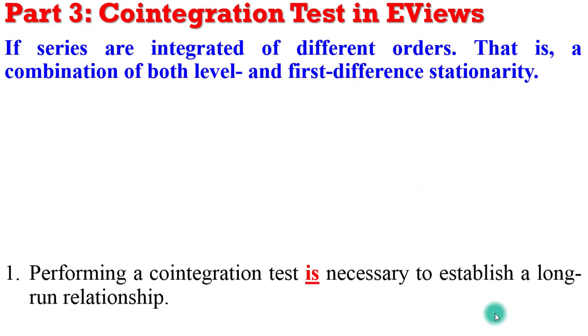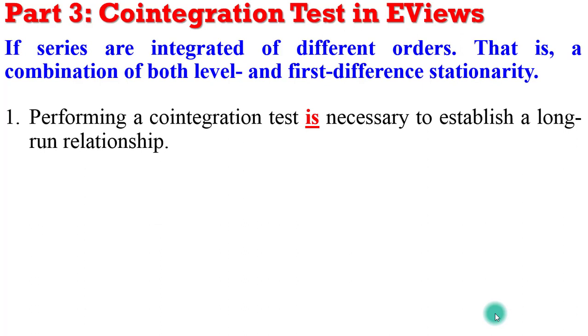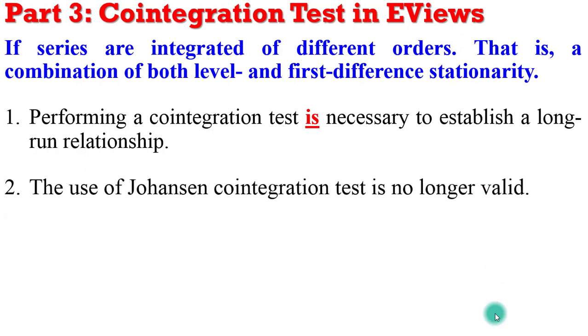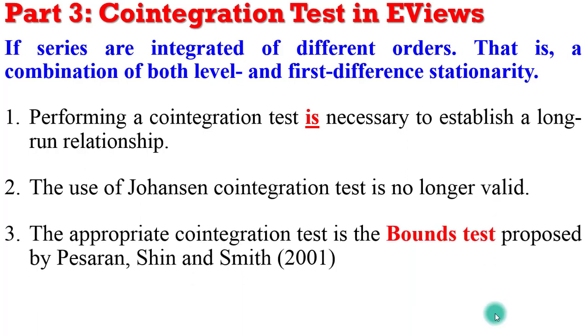If you have such a situation, performing a cointegration test is still necessary to establish whether a long-run relationship exists or not. But in this case, you cannot use the Johansen cointegration test. You can only use the bounds test proposed by Pesaran, Sheen and Smith in 2001.